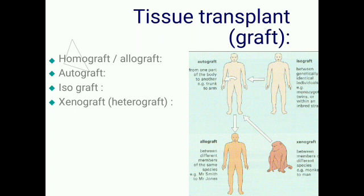The third variety is isograft, which is grafting tissue from identical twins. The fourth variety is xenograft, also known as heterograft, where grafting or transplantation of tissue occurs from one animal of a species to another animal of a different species.